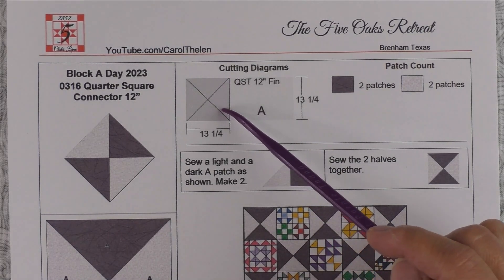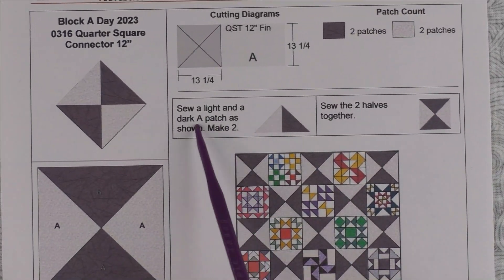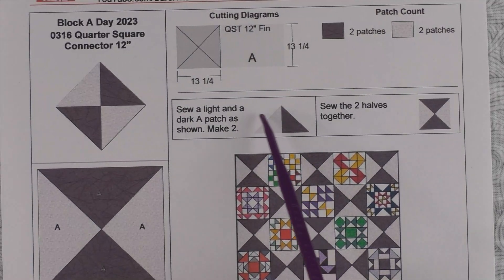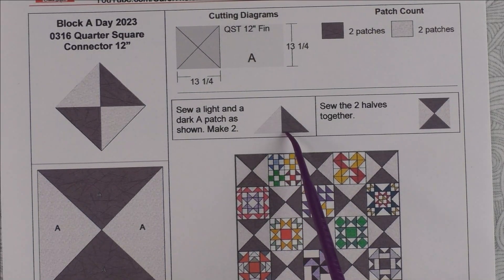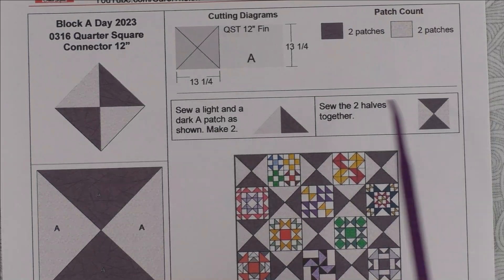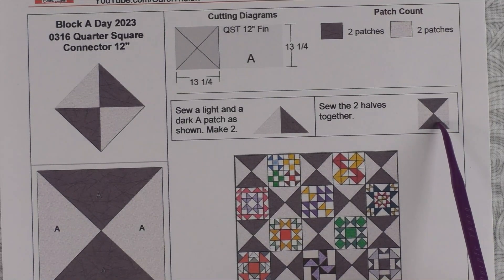If you do the regular piecing method, you're just going to take two triangles and sew them together like this, and then sew two of these together into the hourglass block or the quarter square triangle block.